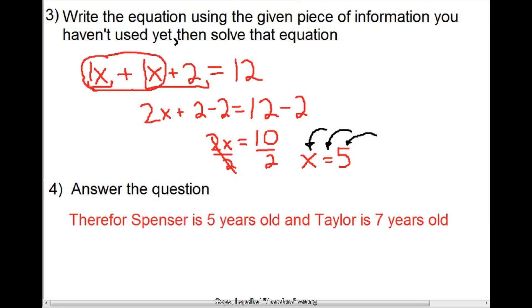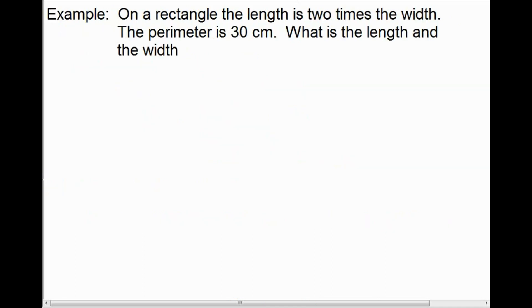It's important to note that this also meets the second condition of our problem — the sum of their ages is 12. Taylor is 2 years older than Spencer, and when you add the two ages together, 5 plus 7 is 12. Since it meets both conditions of our word problem, it's the solution. Now let's take a look at another example to continue exploring solving a word problem with two unknowns algebraically.